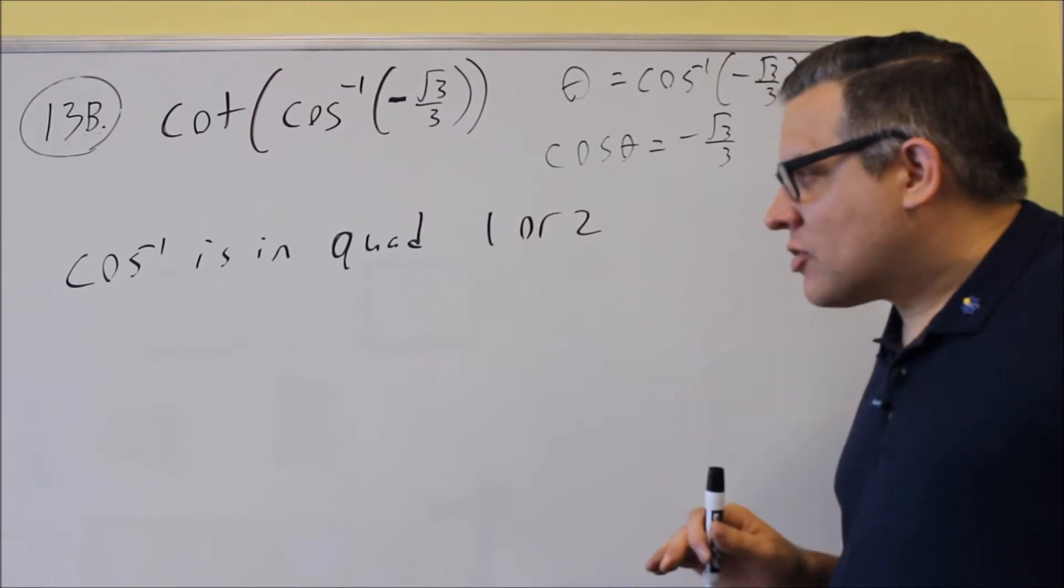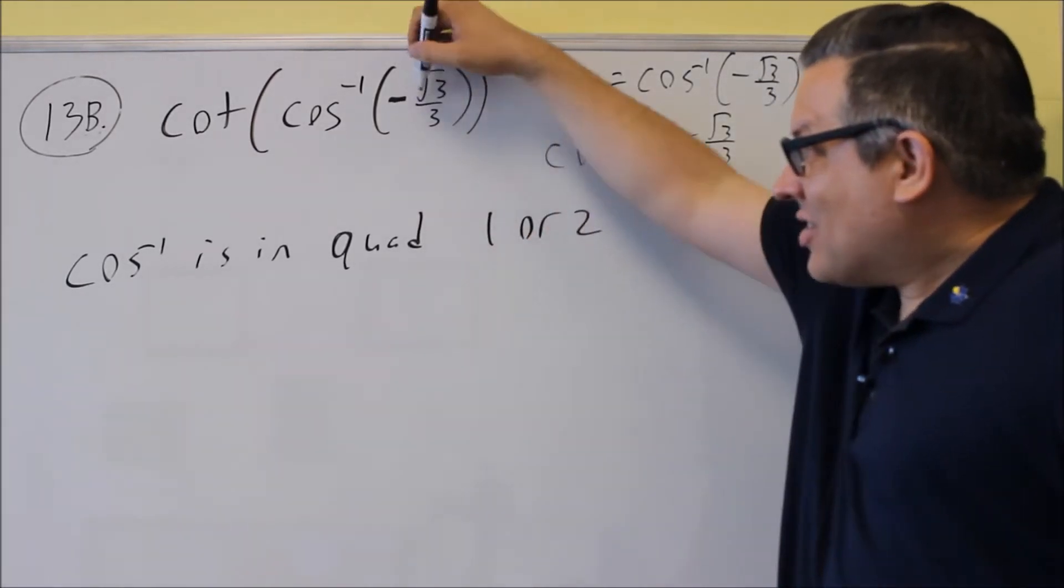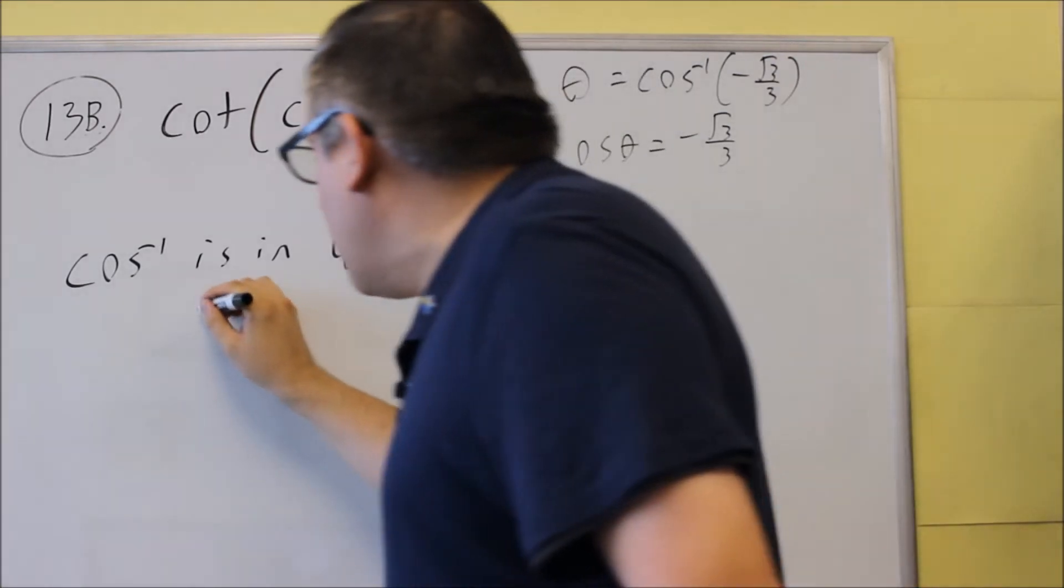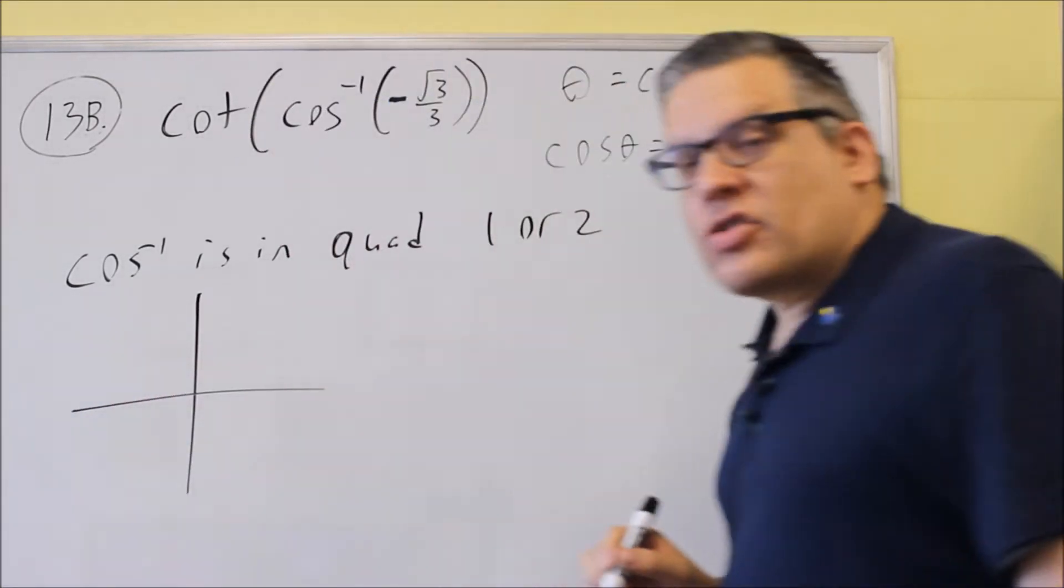If inverse cosine is in quadrant 1 or 2, and this is negative here, then it must be drawn in the second quadrant only.